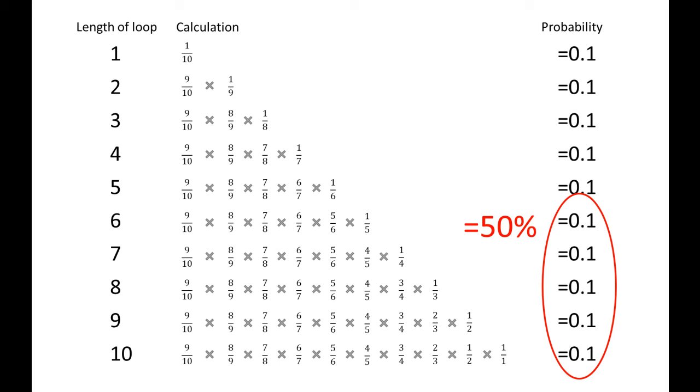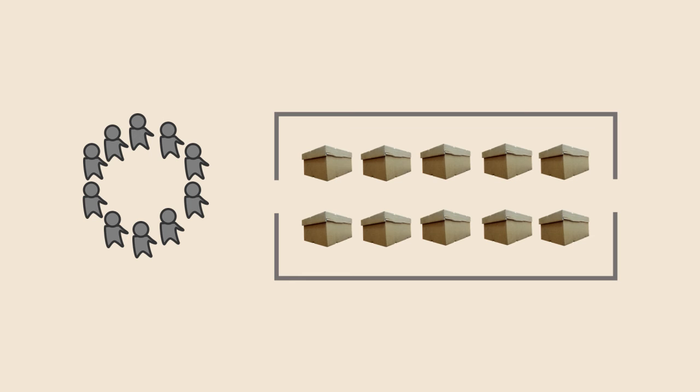That means that the prisoner walks in, opens 5 boxes, and has a 50% chance of finding their number. And this feels right, whichever strategy they follow.